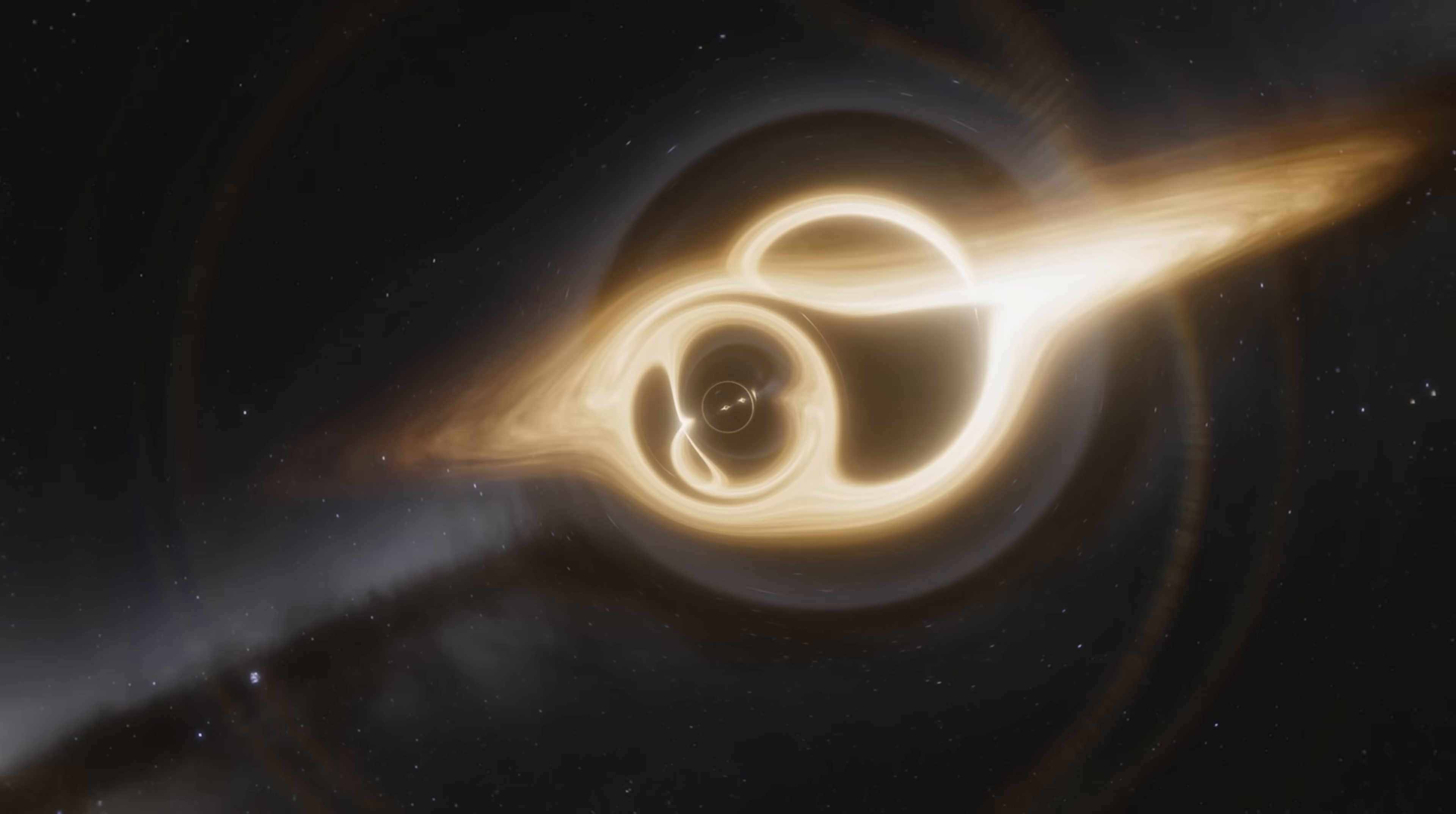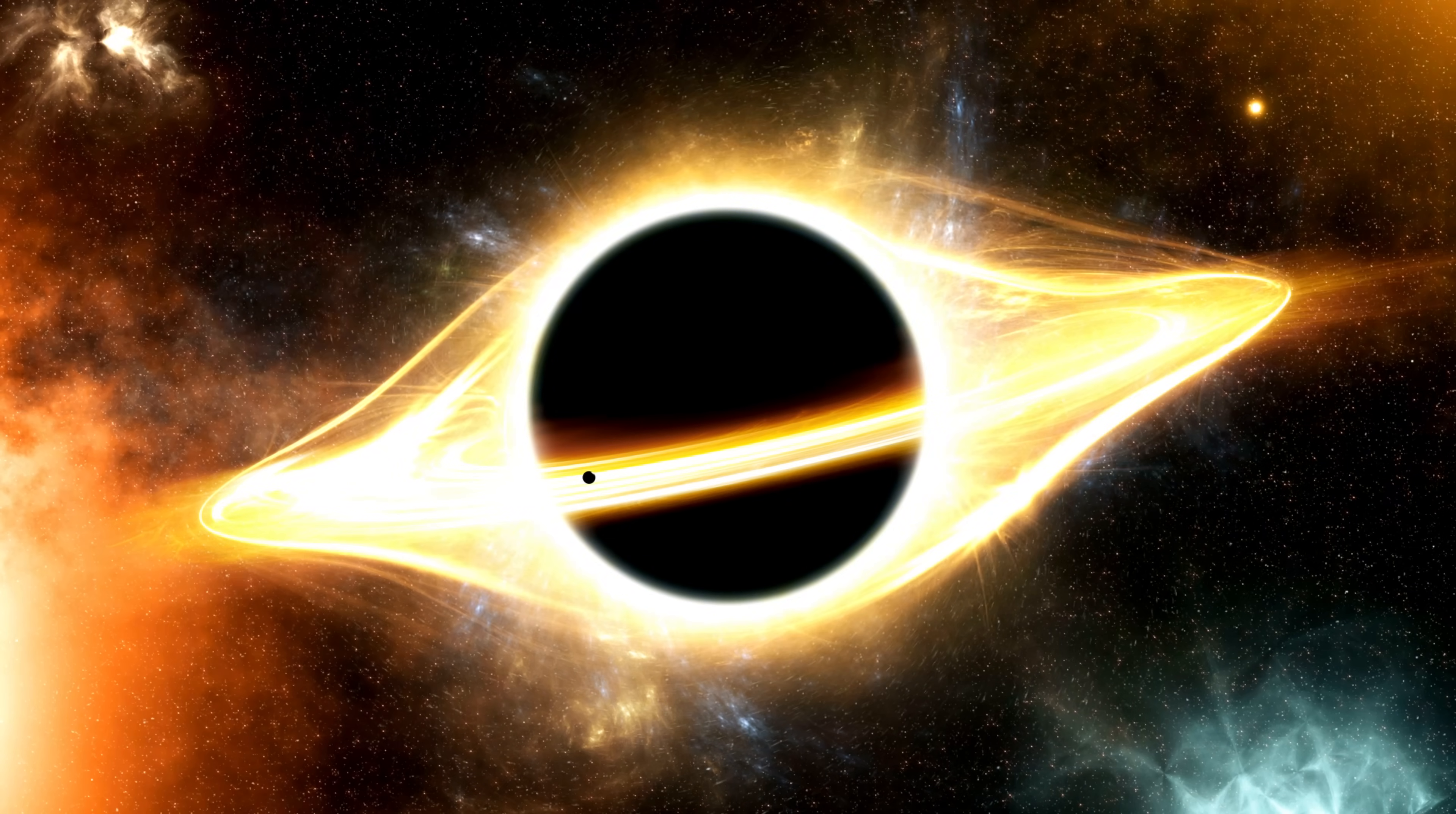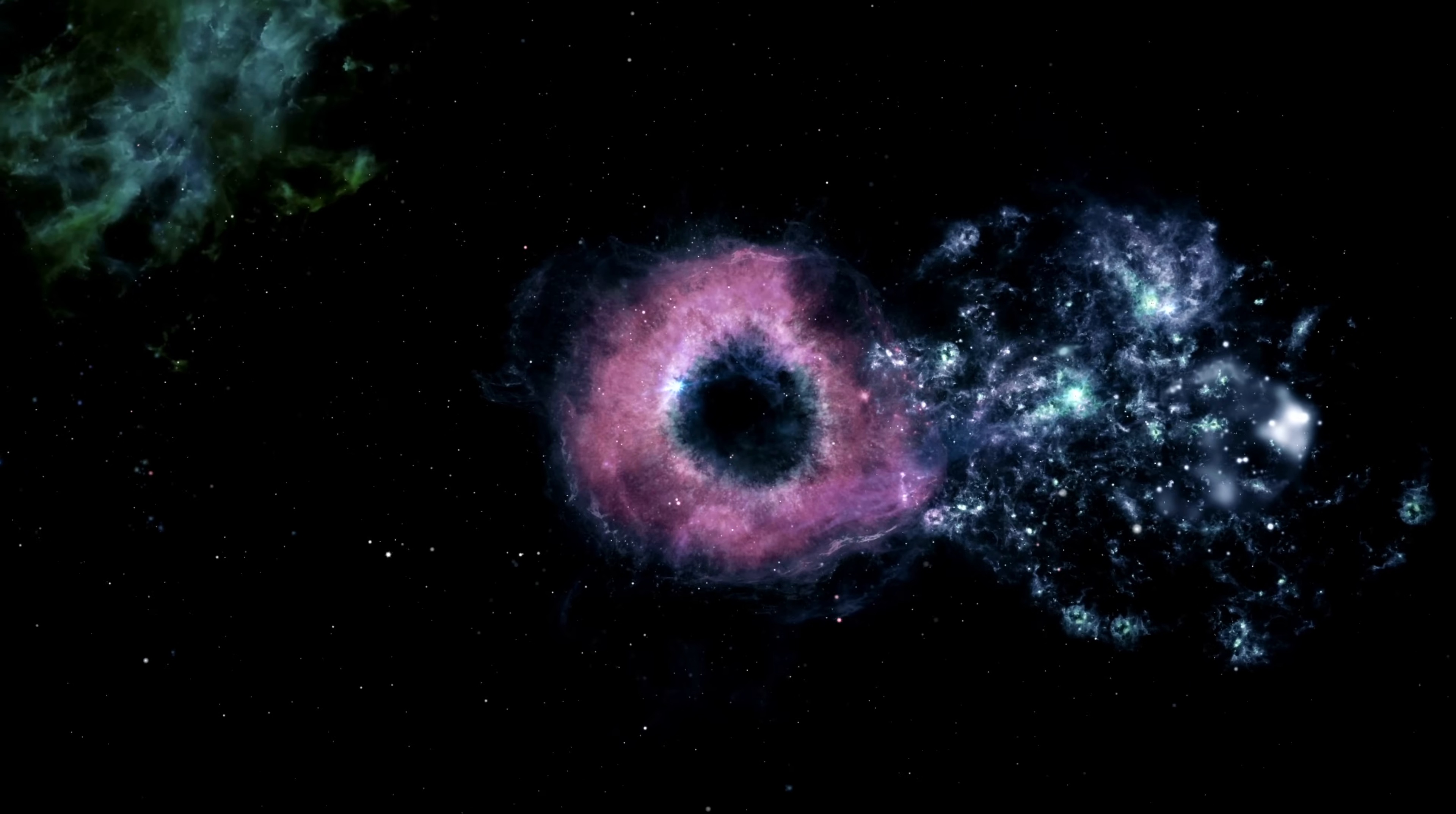Black holes are already pretty massive by definition, but astronomers just discovered a whopper! This monster black hole lurking in our own Milky Way galaxy is a staggering 33 times the mass of our Sun. That's mind-boggling. This discovery, made with the help of the European Space Agency's Gaia mission, can help us understand the role black holes play in the evolution of galaxies, including our own.